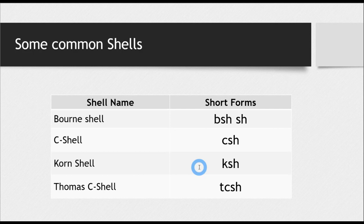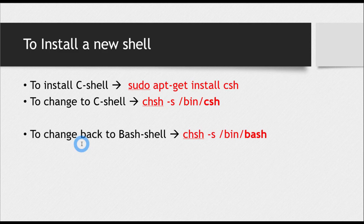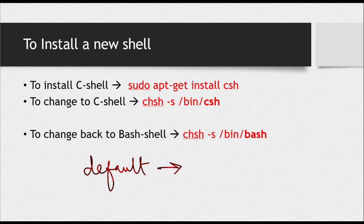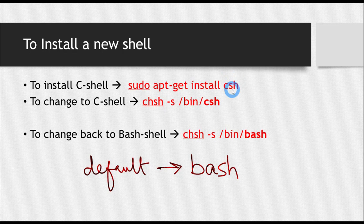If you want to perform shell scripting in C shell, there are two steps. First, you have to install that shell, and then you have to change to that shell. Whenever you run your terminal, the default shell used to execute your commands is — for example, in Ubuntu — bash. C shell is usually not even installed. To install C shell, the command is: sudo apt-get install csh. This is the same install command, except here instead of a software name, we write the short form of the shell we want to install. For example, to install Korn shell we would write ksh instead.